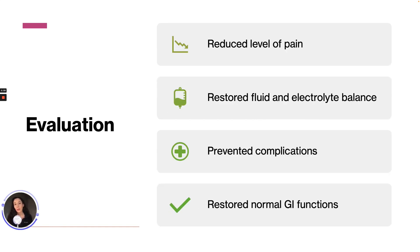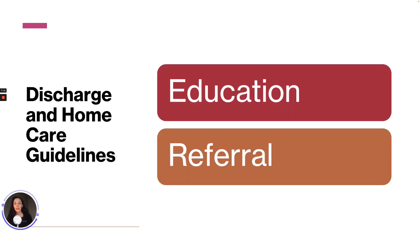For evaluation, based on the patient and their outcomes, goals include reduced level of pain, restored fluid and electrolyte balance, prevented complications, and restored normal GI functioning. For discharge and home care, we should educate the patient and family about care for their incisions and drainage post-op, especially if they are sent home with drains in place. Referrals for home care may be indicated for further monitoring.